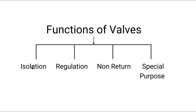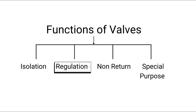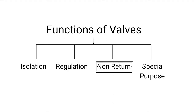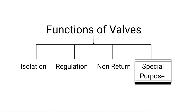Isolation type valves simply cut the flow of fluid. Regulation valves control the flow rate of fluid, as the name suggests. Non-return valves, that is NRV, allow flow of fluid in only one direction. Special purpose valves are used as per their unique functions, which we will see ahead.